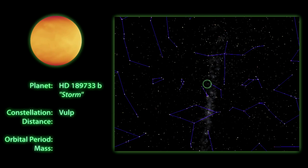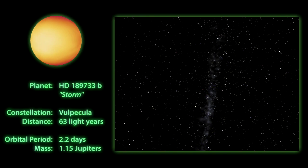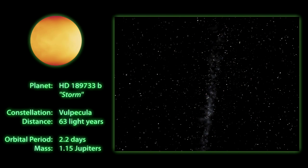A little closer to home, our other X-Planet, Storm, can be found in the constellation Volpecula at a distance of 63 light-years.